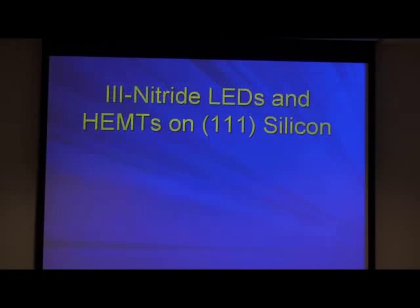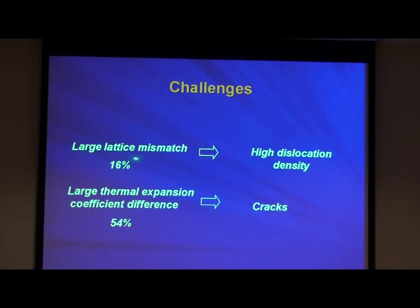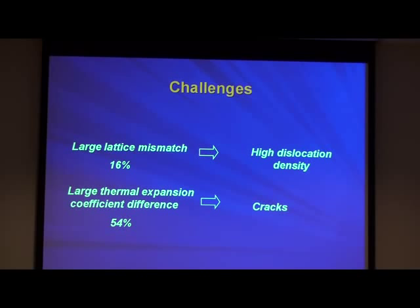I'm going to talk first about III-nitride LEDs and HEMTs grown on (111) silicon. These are the big challenges: there's a 16% lattice mismatch, which generates a lot of dislocations, and the thermal expansion coefficients are 54% different, which generates a lot of cracks. Once you grow a couple of microns it cracks all over the place. Growing nitride on silicon at 1100°C — when you ramp down to cool it, you can hear the cracks. We all heard them. It's depressing.